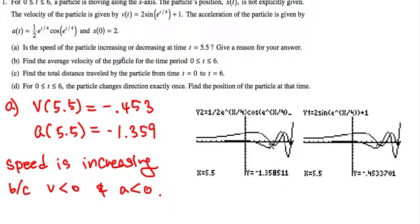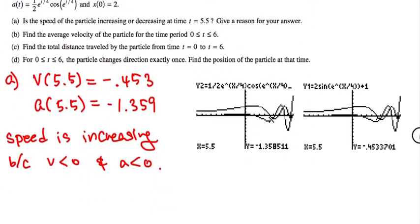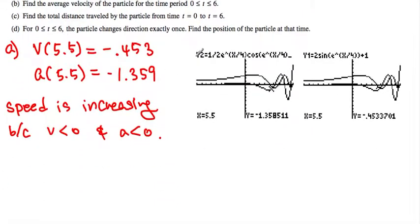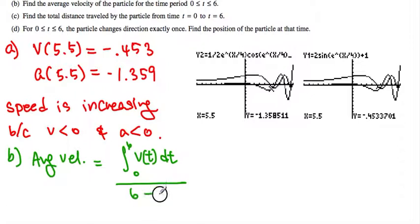Number b. Find the average velocity. Now, you see, we are given the velocity function. And we are looking for average velocity. So, what we have to do is, we have to use mean value theorem, which involves the integral. So, average velocity will be equal to the velocity expression from 0 through 6 divided by 6 minus 0. This will be our expression. So, let's try to do this one together.